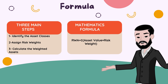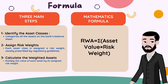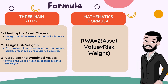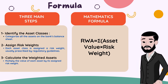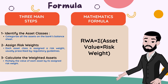Let's talk about the formula. Calculating RWAs involves three main steps. First, identify the asset classes — categorize all the assets on the bank's balance sheet. Second, assign risk weights — each asset class is assigned a risk weight, usually prescribed by regulatory guidelines. Third, calculate the weighted assets — multiply the value of each asset by its assigned risk weight. Mathematically, it looks something like this.